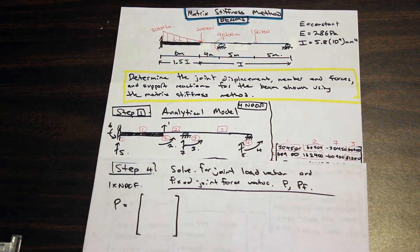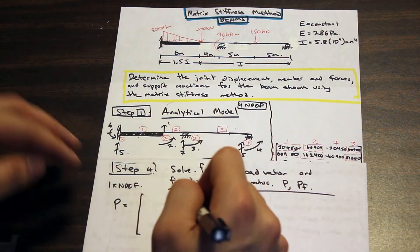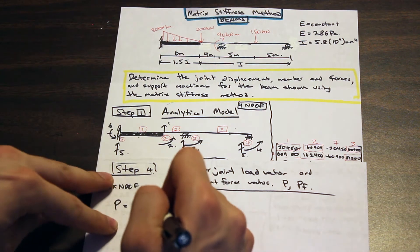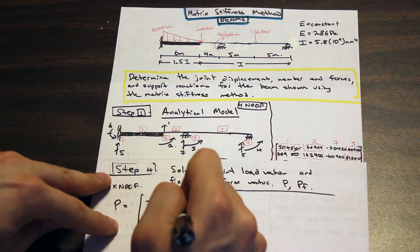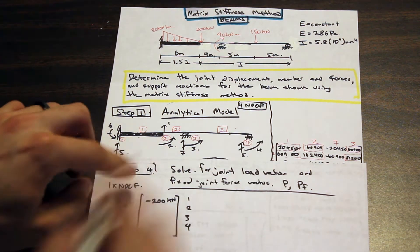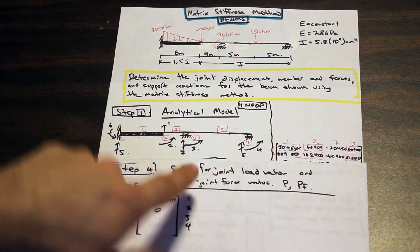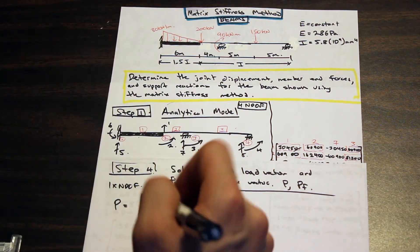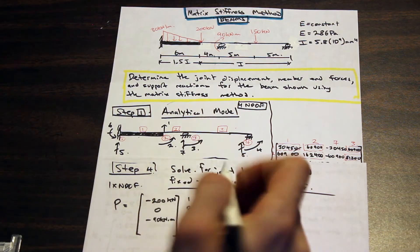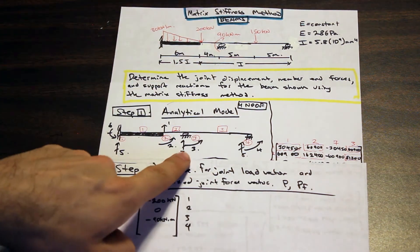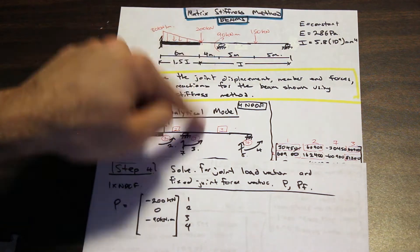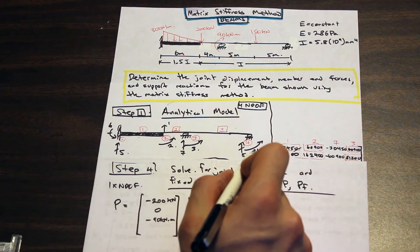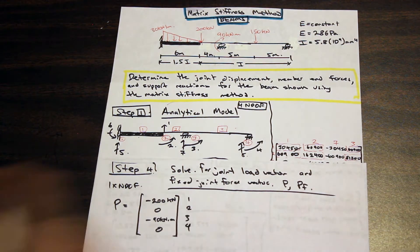Let's number the code numbers for vector P. Degree of freedom one has a negative 200 kN force. Degree of freedom two is a rotation at that joint — no applied rotation, so that's zero. Degree of freedom three is a rotation at joint three, which has a moment, but it's in the negative direction, so that's negative 90 kN·m. Degree of freedom four is zero — nothing applied there.